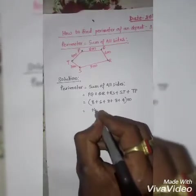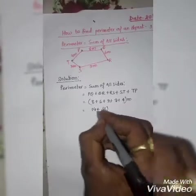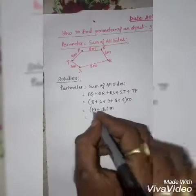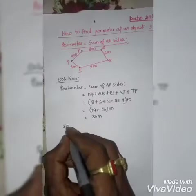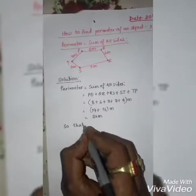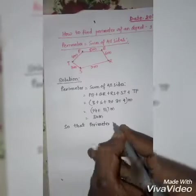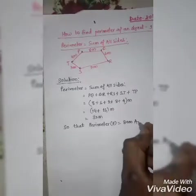8 and 6 become 14, plus 9 and 3 become 12 and 4, 16. And again close the bracket and write here meter. 14 and 16 mean you have 10, 10, 20. 6 and 4, 10, means 30 meter. So that perimeter P equals to 30 meter, answer.